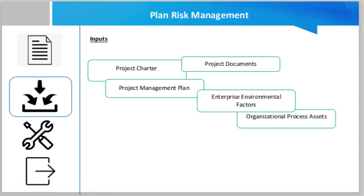The inputs for this process: first is the project charter, which documents the high-level project description, boundaries, high-level requirements, and risk. Then the project management plan — in planning project risk management, all approved subsidiary management plans should be taken into consideration in order to make the risk management plan consistent with them.